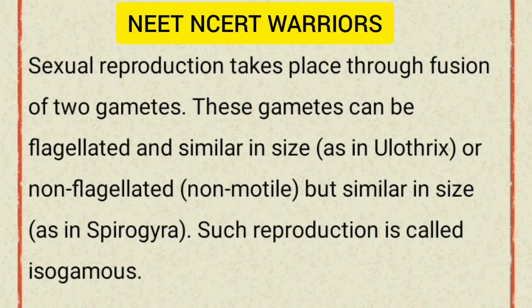Sexual reproduction takes place through fusion of two gametes. These gametes can be flagellated and similar in size, as in Ulothrix, or non-flagellated and non-motile but similar in size, as in Spirogyra. Such reproduction is called isogamous.